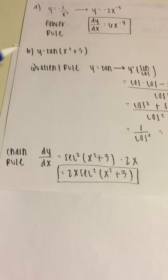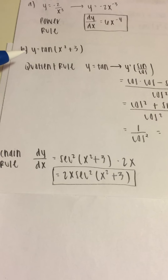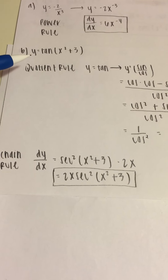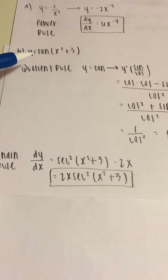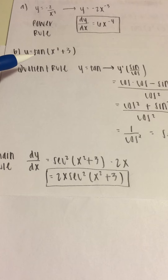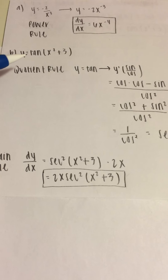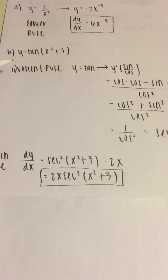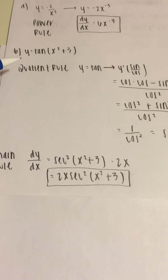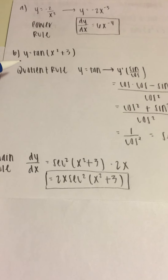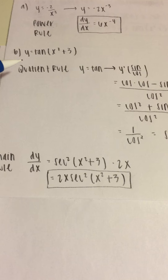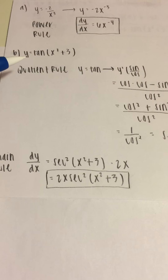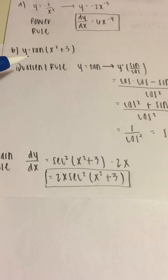Next, for B, we get y equals tangent of x squared plus 3. To solve this, we are going to have to use the chain rule because there is a function within a function.